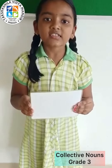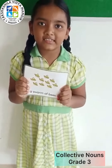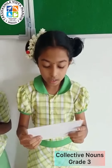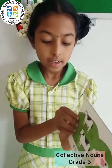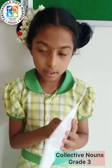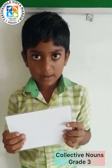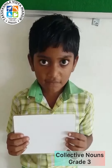A group of bees is called a swarm of bees. A group of cows is called a herd of cows. A group of kids is called a bunch of kids.